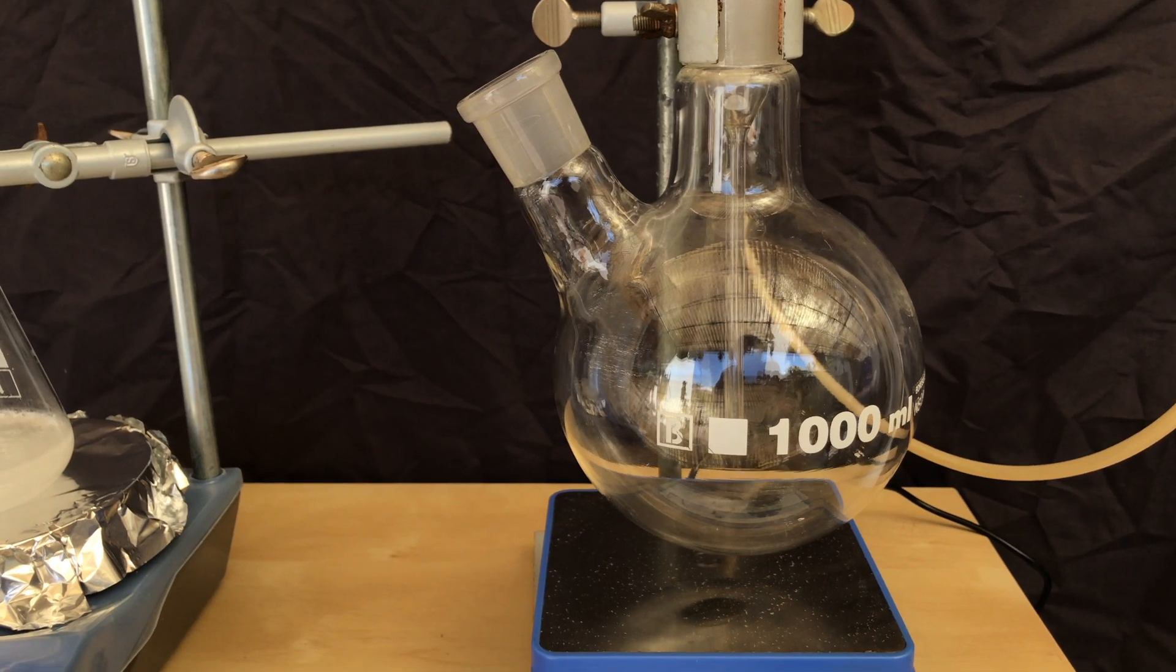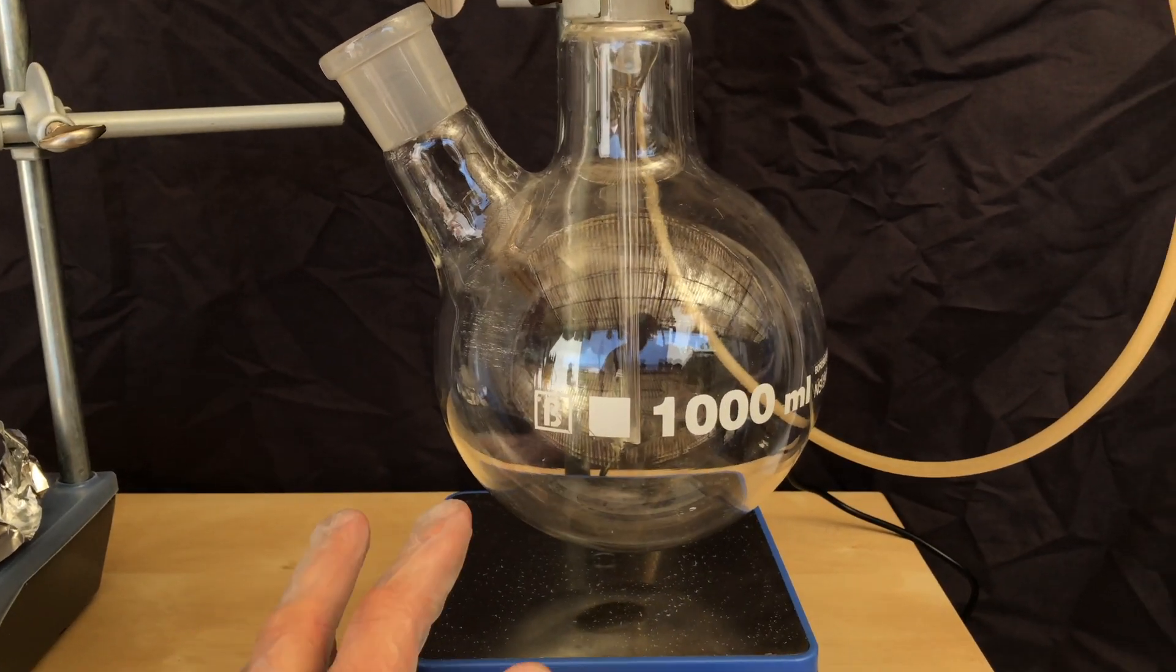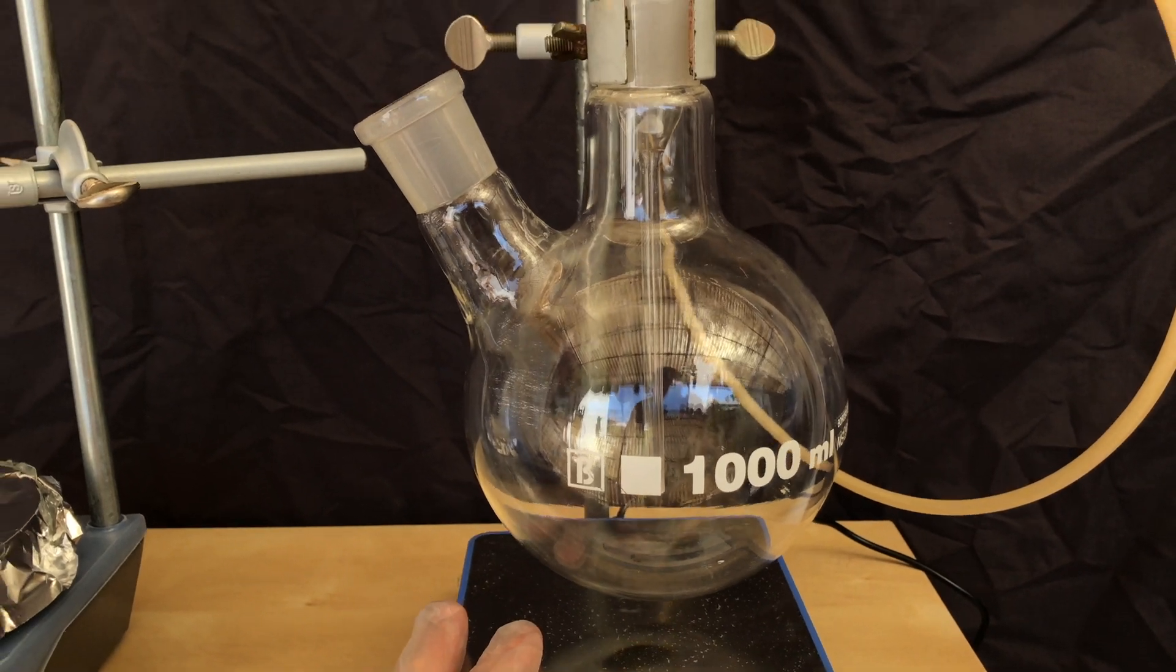This is the second part of our apparatus. We have this simple flask on a magnetic stirrer and the flask will later be submerged in an ice bath.